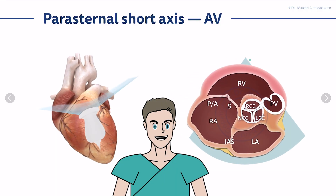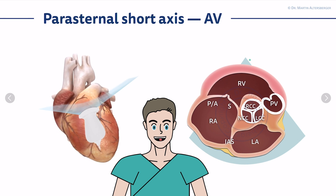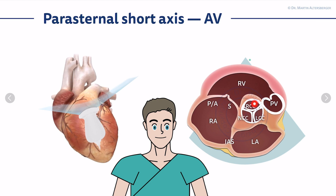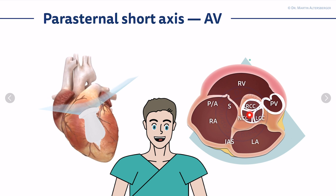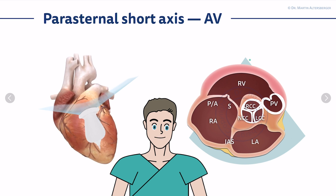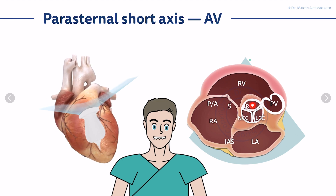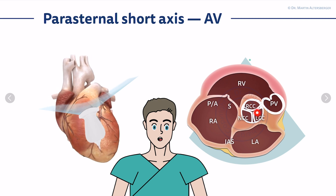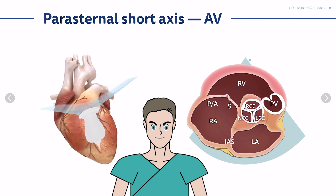In the first views of the parasternal short axis, we focus on the aortic valve. The aortic valve has three cusps: the right coronary cusp, the left coronary cusp, and the non-coronary cusp. The orientation is easy to remember: the right coronary cusp always points towards the right ventricle, the left coronary cusp towards the left atrium, and the non-coronary cusp towards the interatrial septum.